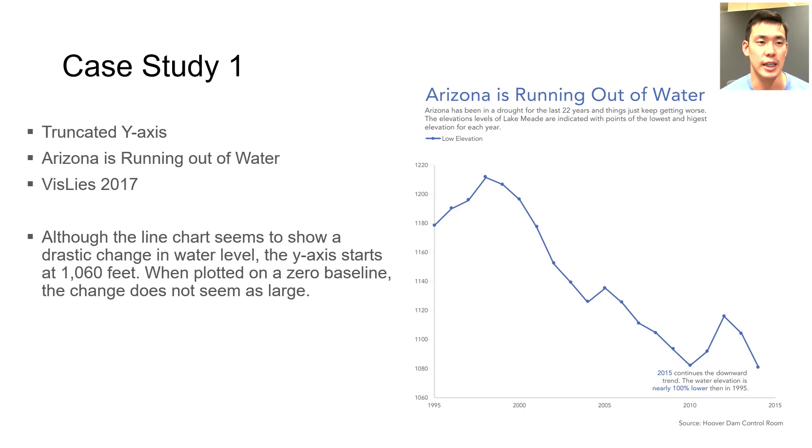In this first case study, which was shown in VisLies 2017, we see an alarming image of Arizona running out of water. The truncated y-axis exaggerates this effect. The annotation tool reads the image and shows what the line chart looks like if the graph started from zero.